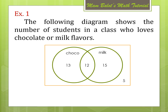How about if we find C intersection M, which means these are the students who love choco and milk — both choco and milk. There are only 12 students, which is the intersection of the choco and milk. So, we have 12 students who love choco and milk flavors.